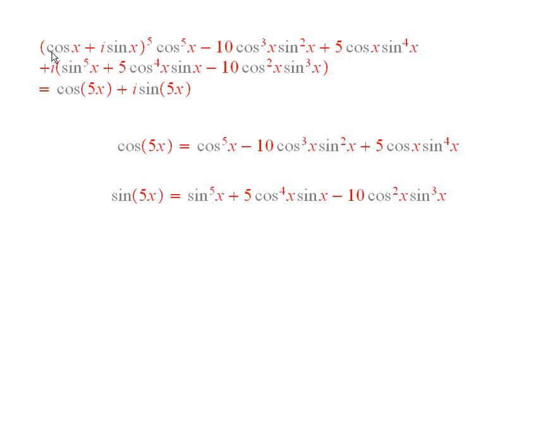I'm going to find formulas for cosine of 5x and sine of 5x. I'm going to do that using De Moivre's Theorem. I'll take cosine x plus i sine of x, raise it to the fifth power, and that equals this.